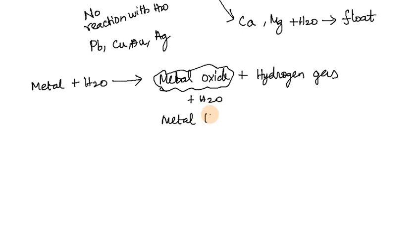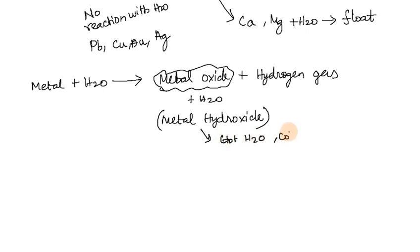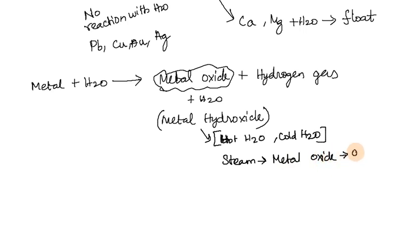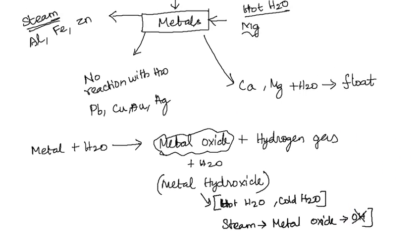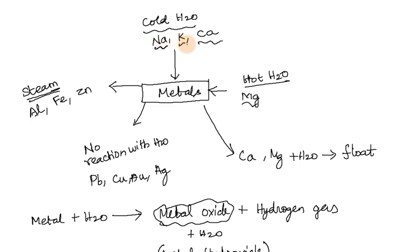The reaction produces metal oxide and hydrogen gas. Metal oxide can then convert to metal hydroxide. In hot water and cold water reactions, the metal oxide is formed first, which then converts to metal hydroxide. Potassium and Calcium are involved in these conversions.